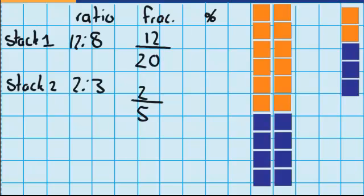Now we need to work out what that is as a percentage. I know that twelve twentieths is the same as six tenths, so that must be sixty percent. And I know that two fifths is the same as four tenths, so forty percent of stack two is orange.